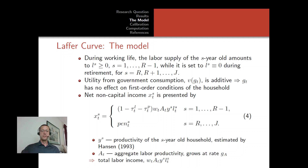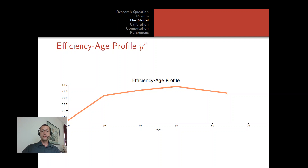In our demographic model that explicitly accounts for workers' ages, we introduce YS — the productivity of the S-year-old. This profile is taken from Hansen and is hump-shaped, peaking at age 50. Fifty-year-old agents are almost twice as productive as 20-year-olds. This age-efficiency profile is paramount to introduce if you want to study demographic effects on the Laffer curve.